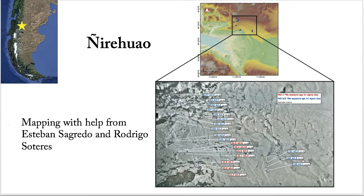Nirehua is a site a little bit farther to the north, where we've just finished most of the chronology, but it's never been mapped. So before it gets too cold, I'm planning to map the glacial geomorphology with the help of Esteban, who's really an expert in this field, so that we can identify which moraine crests connect to which and identify nice sequences of moraines.